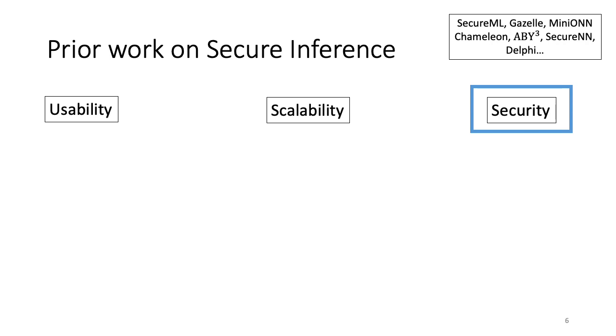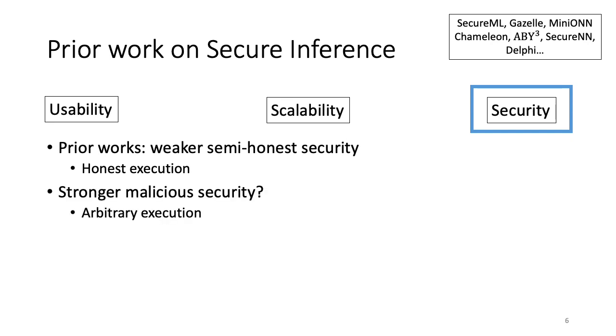Lastly, there is the security aspect. Prior works on secure inference have mostly worked in the weaker model of semi-honest security where parties are assumed to follow the protocol specification honestly. Instead, we would like to work in the stronger model of malicious security where security holds even when the adversarial parties arbitrarily deviate from the protocol specification. While some recent works have described malicious secure protocols such as ABY3, there is no implementation of malicious secure neural network inference tasks in them.